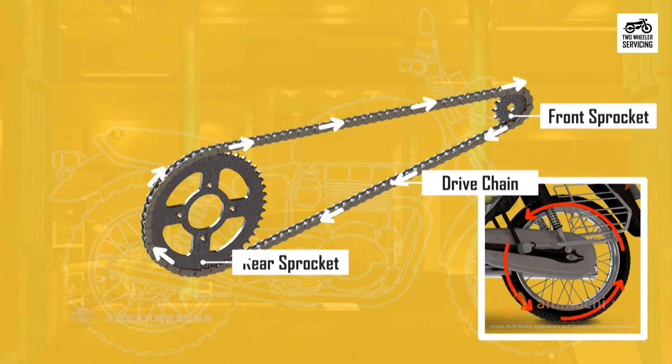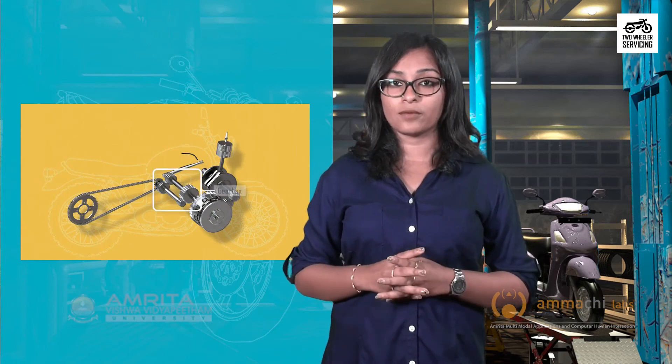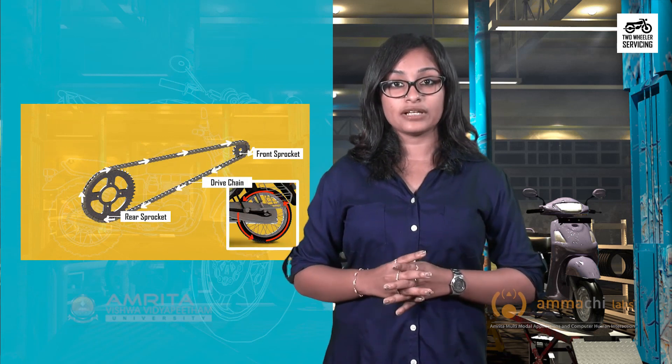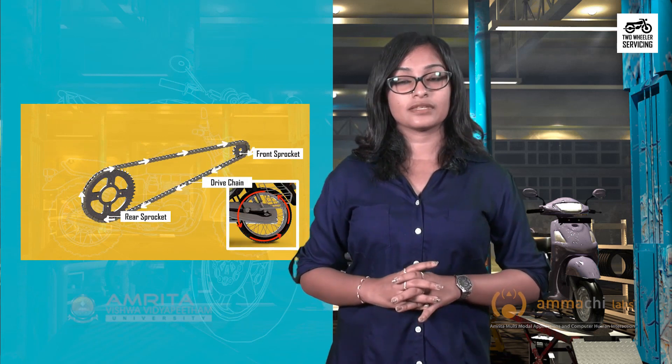With that we have come to the end of the session. In this session we learned that power is transmitted to the wheel from the engine through the gearbox, clutch, and chain drive. The clutch connects and disconnects engine power from the transmission, allowing for smooth gear changes. The gearbox increases and decreases the speed of the motorcycle through a system of gears using the gear lever. The chain drive transmits power from the gearbox to the rear wheel through sprockets and the chain.